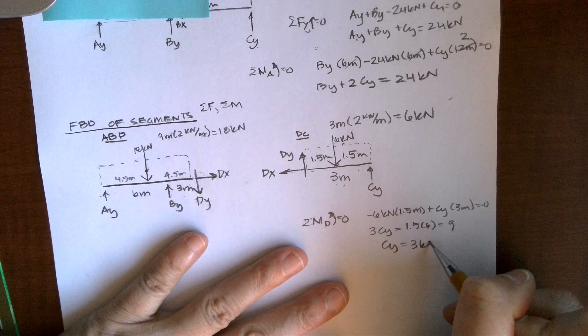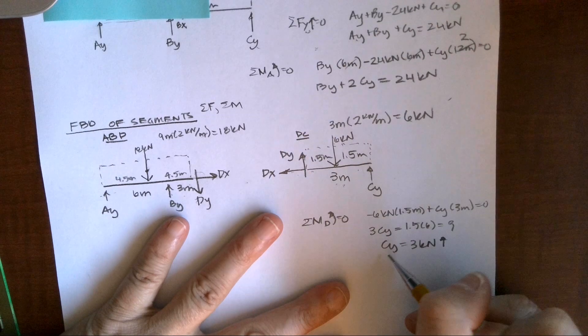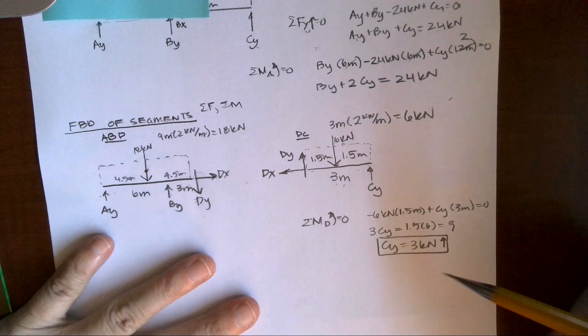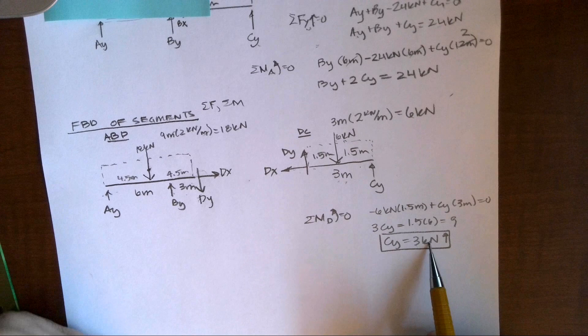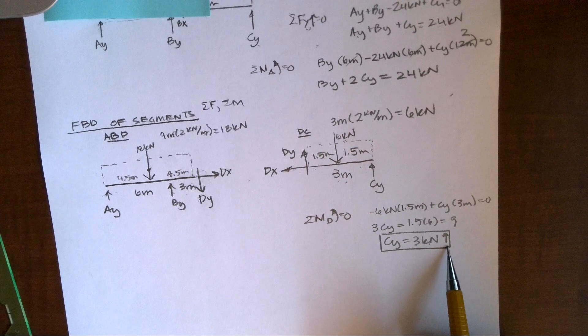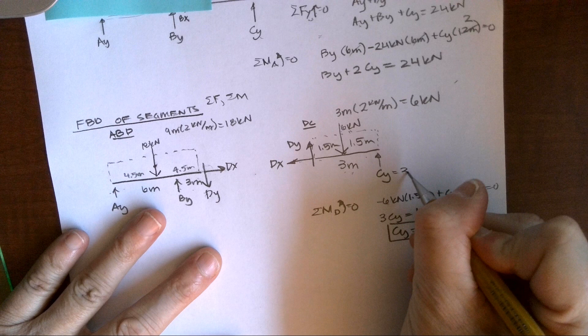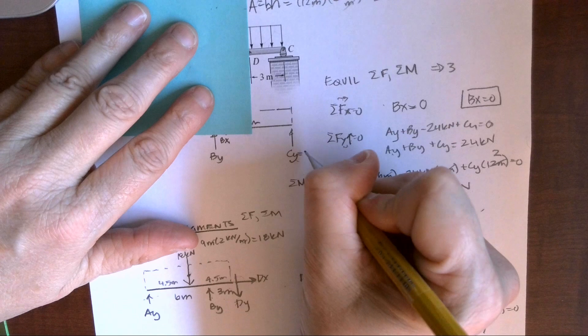It's a positive value, so my assumption of going up is true. And remember, when we give a solution for a reaction, we always have the positive magnitude. We have our units, and we're going to show the direction that it's actually acting. I like to go back and add these values to my free body diagrams, because then I know what I'm doing.